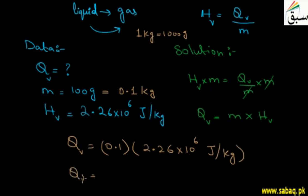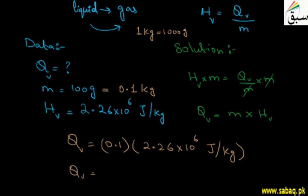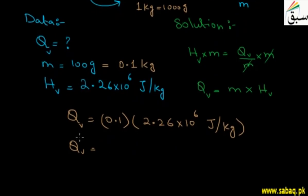Now when you multiply it, you get the answer: 226,000 joules. Here the mass unit kg cancels—kg from the numerator and kg from the denominator cancel—leaving joules as the unit for the amount of heat.